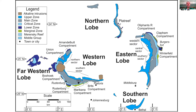So here's the Bushveld. I think most people listening know quite a bit about it. Very briefly: the geology — it's about 400 kilometers in diameter and it's one of the classic examples of a layered mafic-ultramafic intrusion. It's divided into zones, which are stratigraphic levels in the complex.